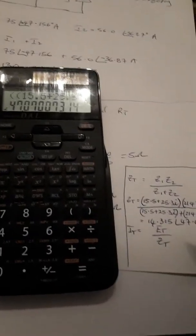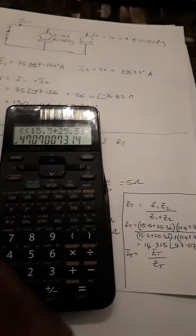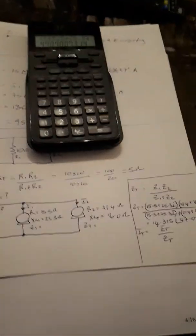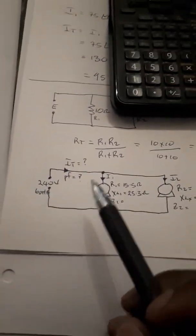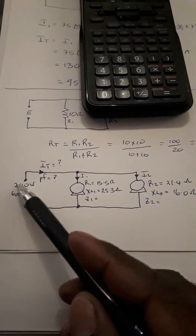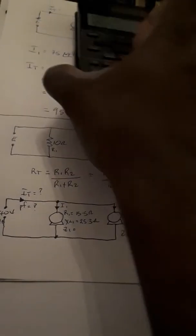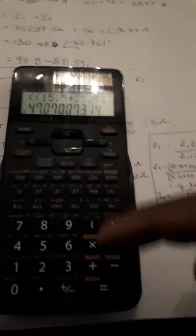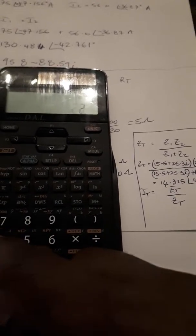Now without doing much to the circuit here, without doing much else, we can go ahead and find IT because the value for ZT is stored in the calculator's memory. So IT here is going to be total voltage or the supply voltage divided by total impedance.